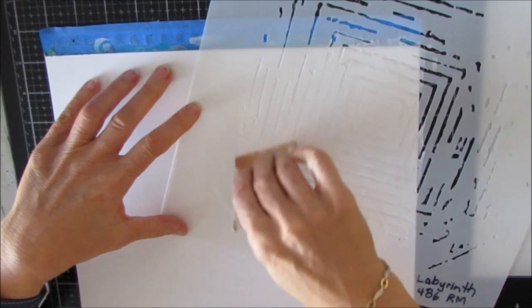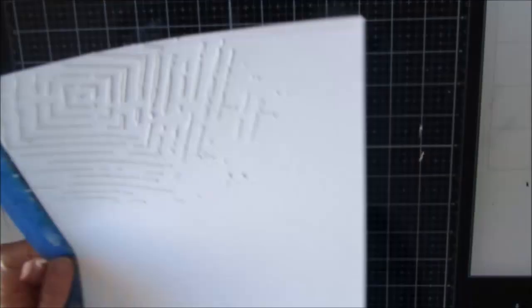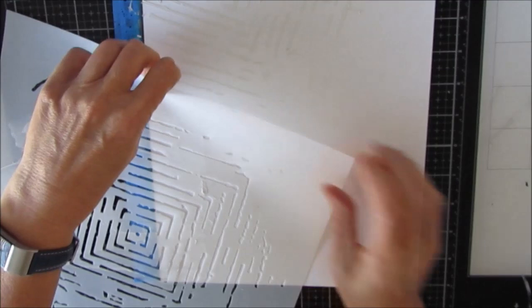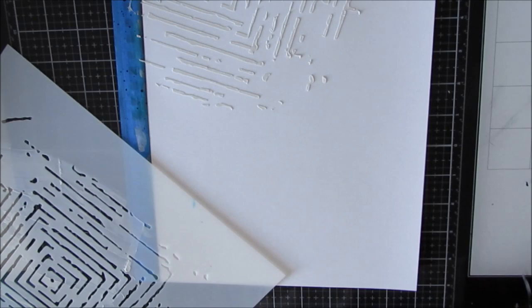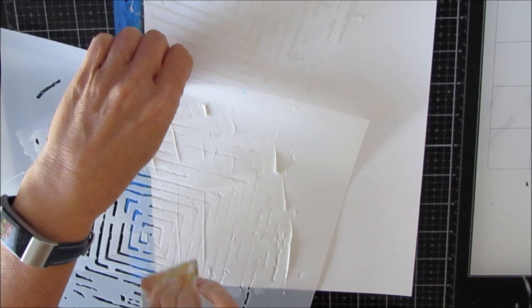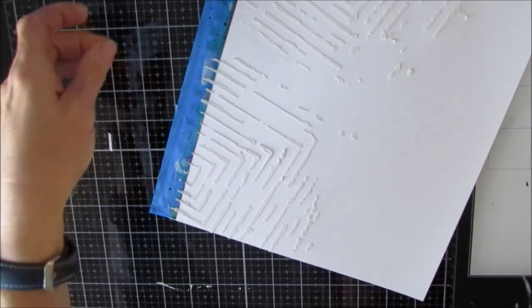So today I wanted to use this new to me stencil from Crafters Workshop called Labyrinth. I grabbed my TCW white modeling paste and I am applying it through the stencil in three and a little bit of sections. Loving the angular lines, the imperfection of this. I think this is really going to work well for a first layer. Because it's a first layer, not a focal image, I'm not overly concerned on getting a perfect stenciling.